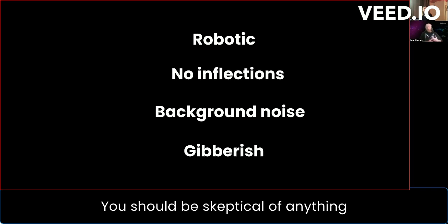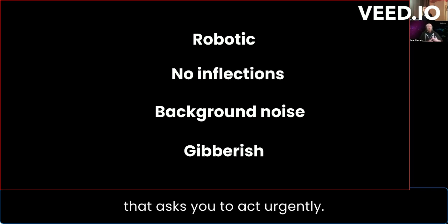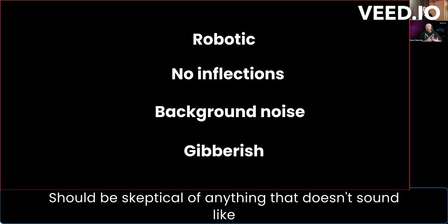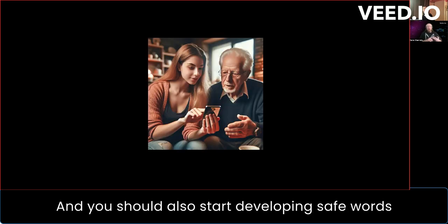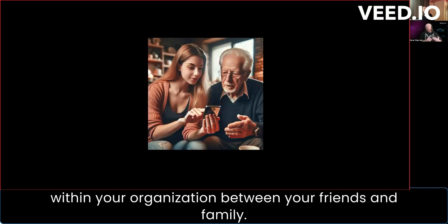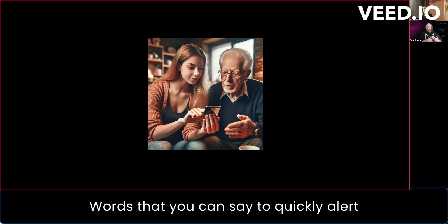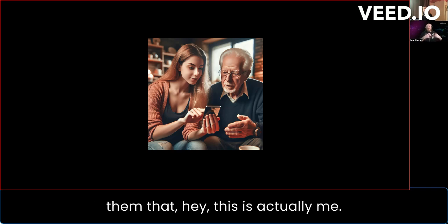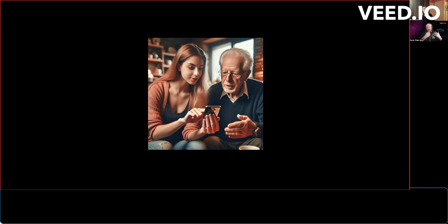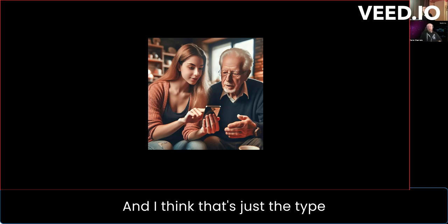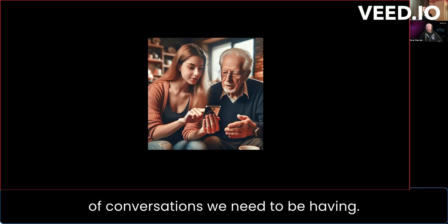A lot of those signs might not be around in years, months — the way AI is going, maybe not even weeks. You should be skeptical of anything that asks you to act urgently, and skeptical of anything that doesn't sound like a request that makes sense. You should also start developing safe words in your organization, between your friends and family — words you can say to quickly alert them that this is actually you, that only you both know, proving your identity.